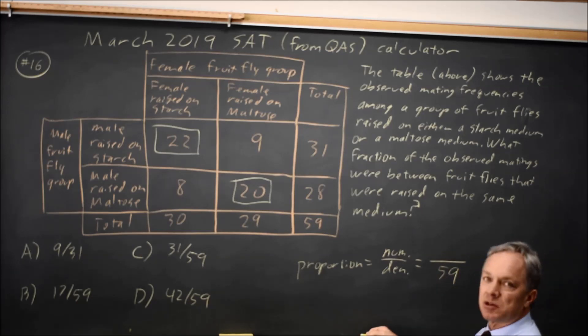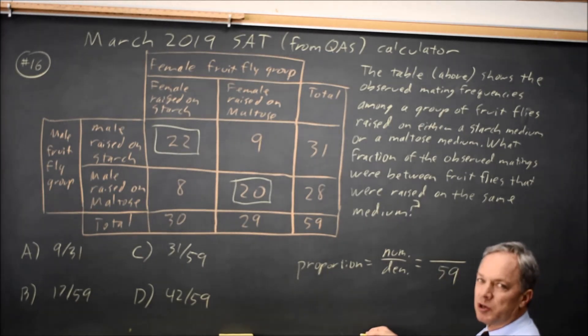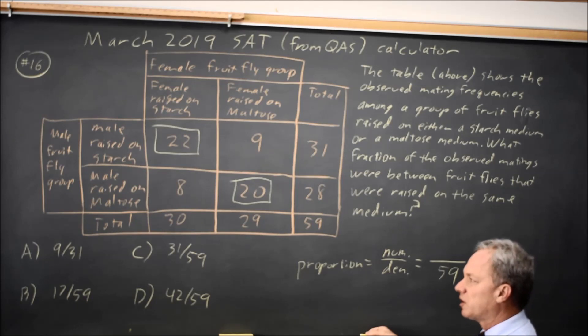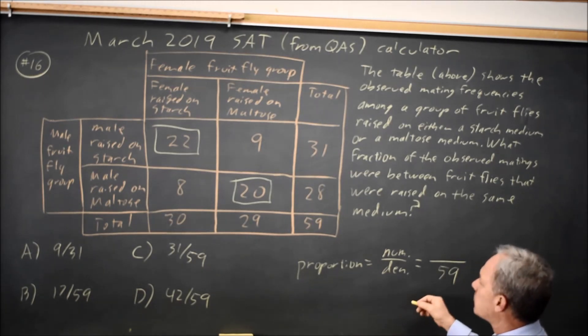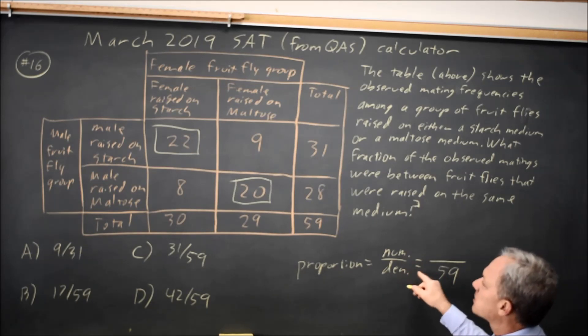They might phrase it so it's only one row or more than one row, or only one column or more than one column, or they might phrase it as the entire table as they did in this case. My denominator of the total number of matings is 59.